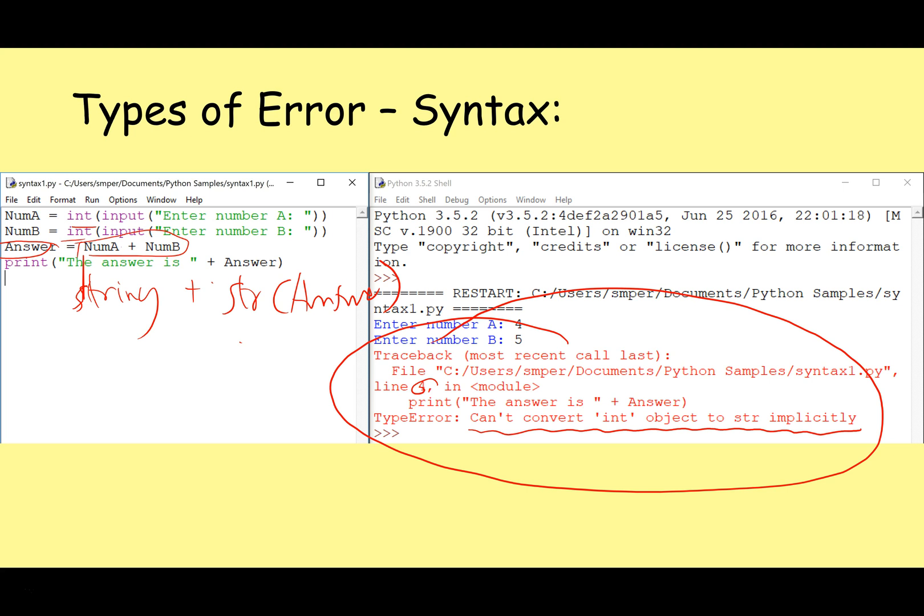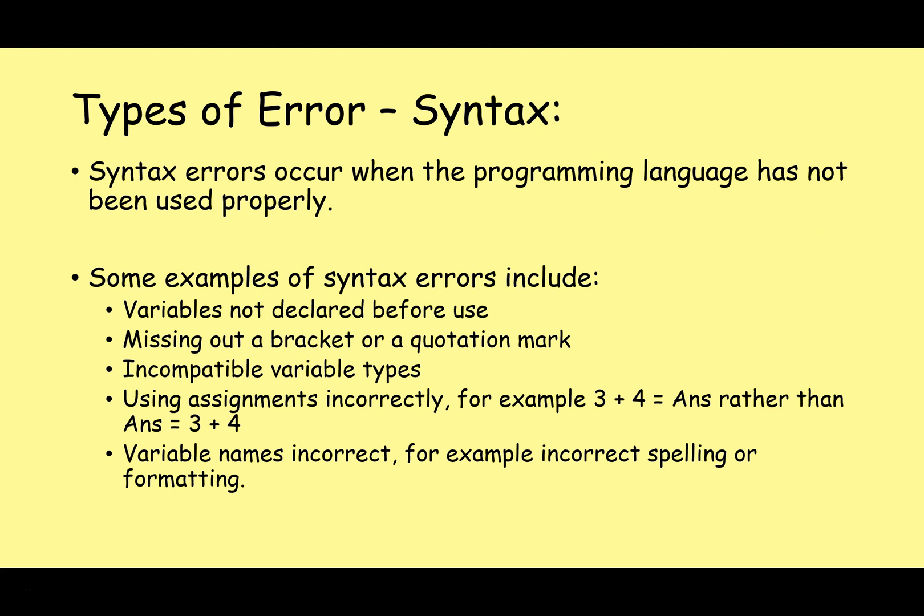So syntax errors occur when the rules of a programming language have not been used properly. Some examples include variables not declared before use. So for example, I say counter plus equals one. That only works if somewhere in my program I've given an initial value to counter. Missing out a bracket or a quotation mark, I do that all the time. Incompatible variable types, again we saw an example of that on the previous slide. Using assignment incorrectly, so for example we might say three plus four equals answer rather than answer equals three plus four.